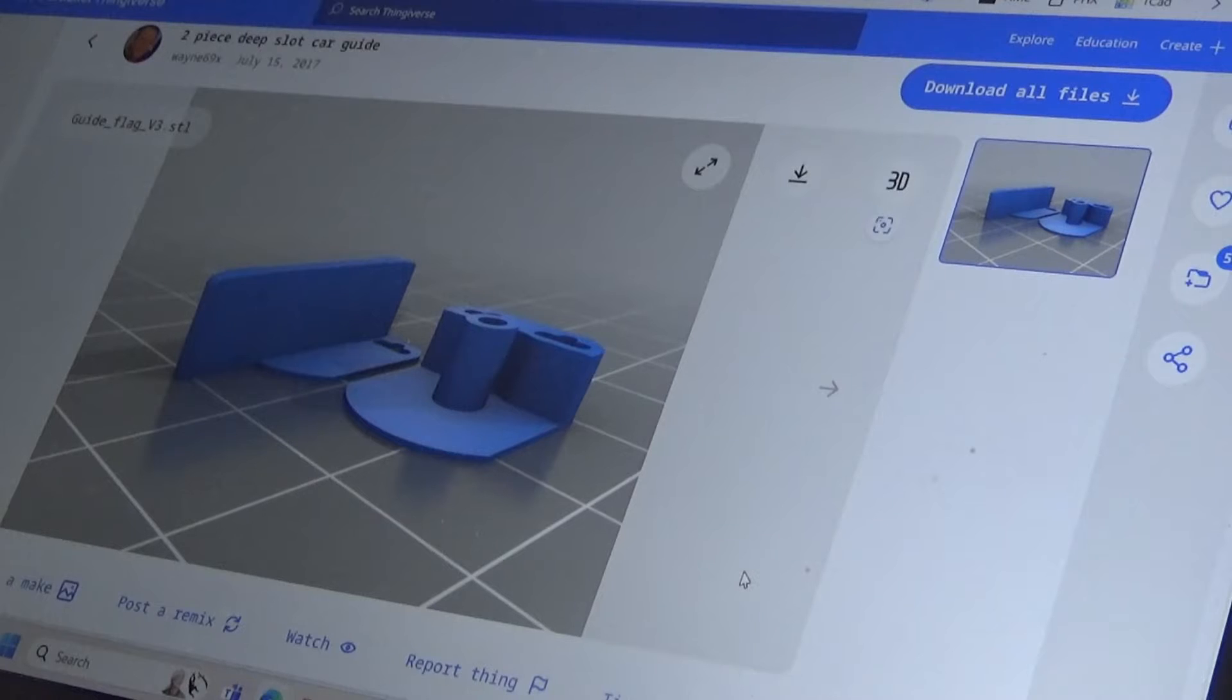So if you go on Thingiverse, there's a million zillion STL files for you to start playing with. And I was lucky enough to find a file called guide flag v3 by Wayne69x. And this was the starting point for the guide that I'm going to use. He's already done all the hard work. And so I downloaded this file and then opened it up in Tinkercad and began to do some customization of it.